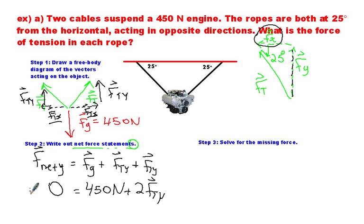The force of gravity is 450 newtons, and there are two equal forces of tension in the y direction. If I do a little bit of algebra here, I move my 450 to the other side by subtracting 450 newtons from both sides. I get 450 newtons equals two times force of tension in the y. So force of tension in the y direction is equal to 225 newtons.